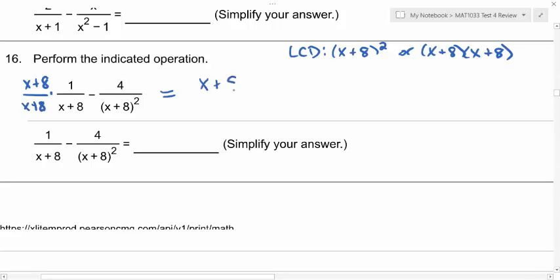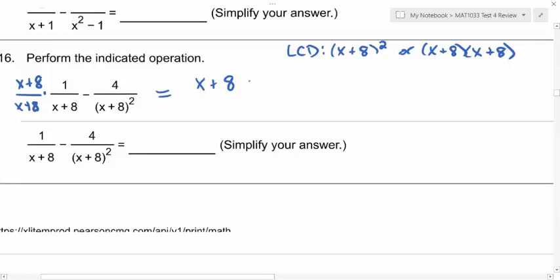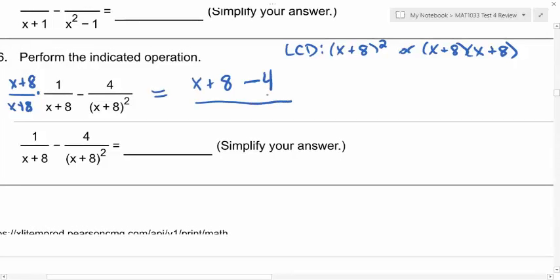And then from the next fraction, you have a minus 4, right? All over your common denominator, x plus 8 squared. So what is x plus 8 minus 4? X plus 4.